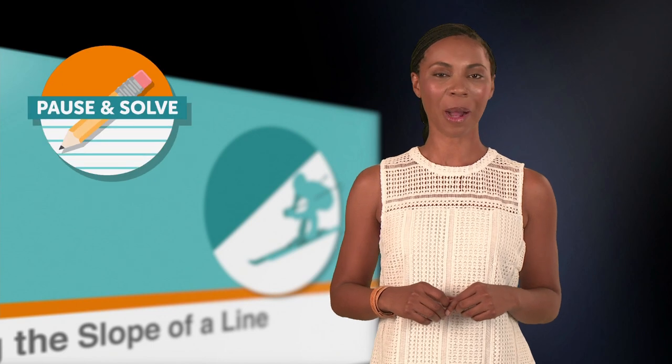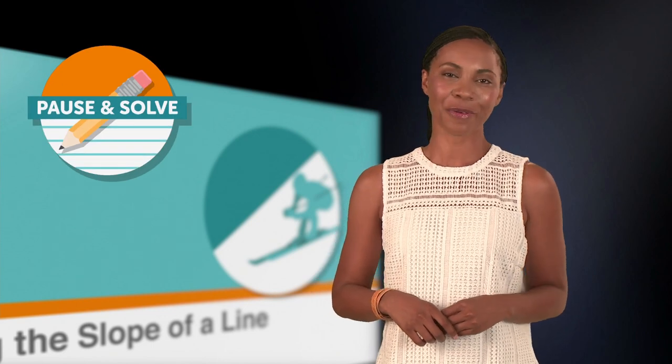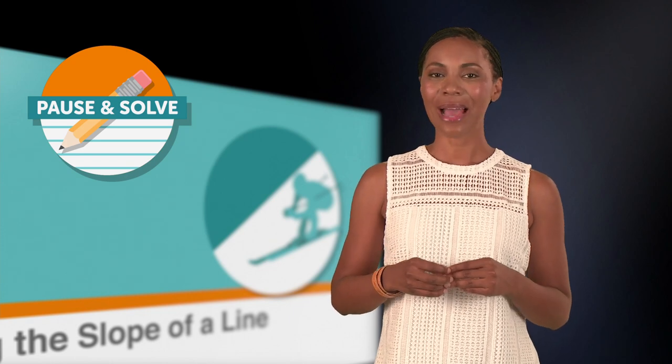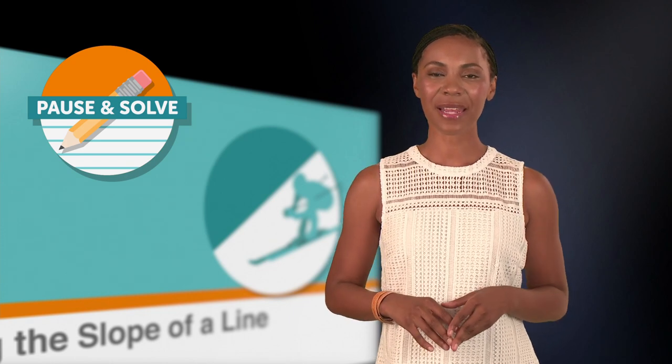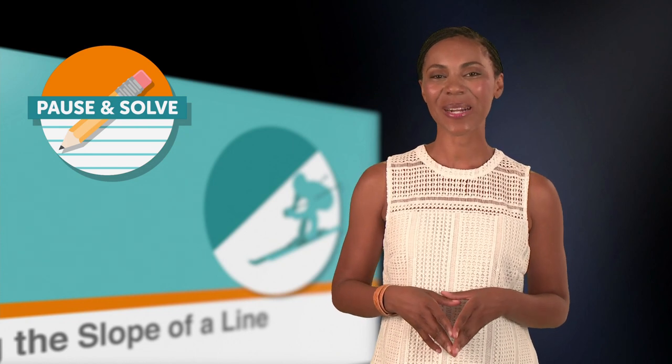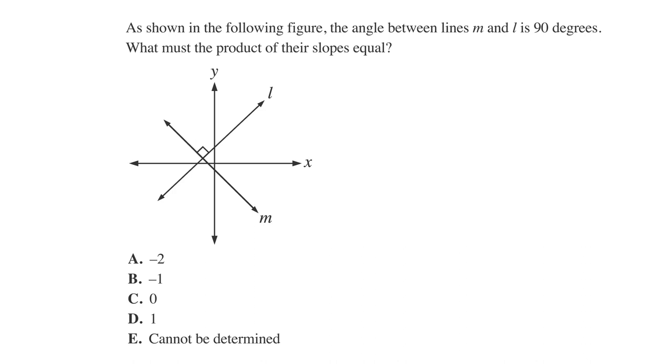However, I'm going to make this a pause and solve problem, so you can work it out on your own before we go through it together. Grab some paper and a pencil, and when I say pause, you'll pause the video and solve the problem. Come back when you're done. Here's the question. As shown in the following figure, the angle between lines M and L is 90 degrees. What must the product of their slopes equal? Okay. Ready, set, pause.